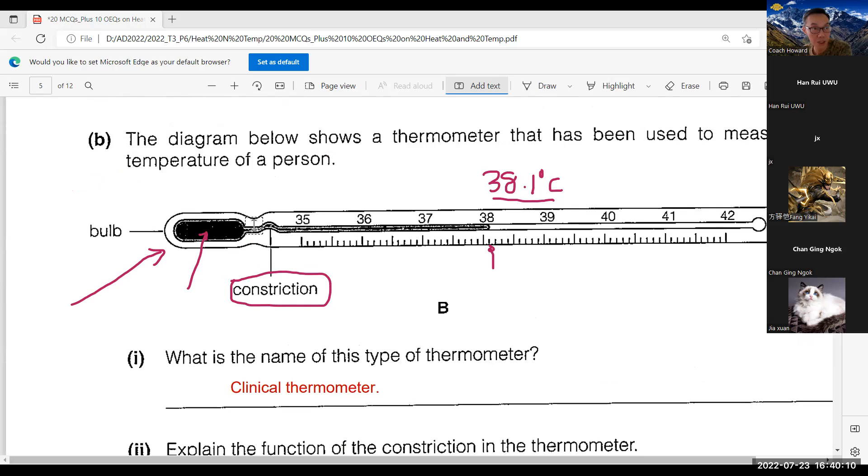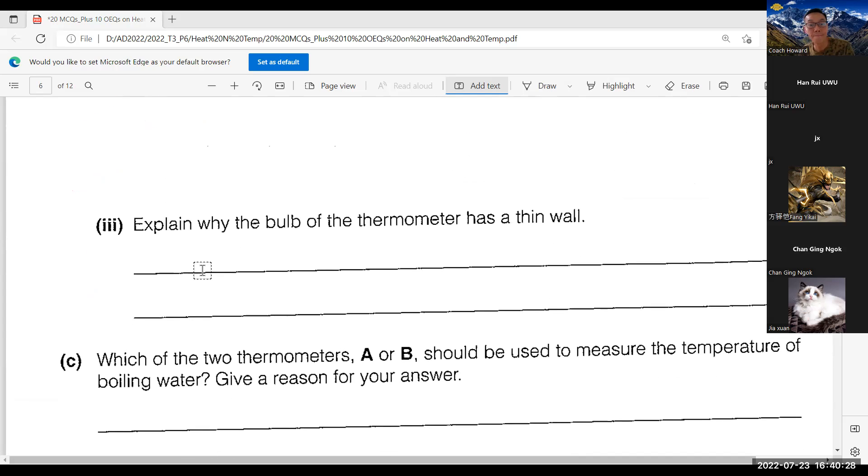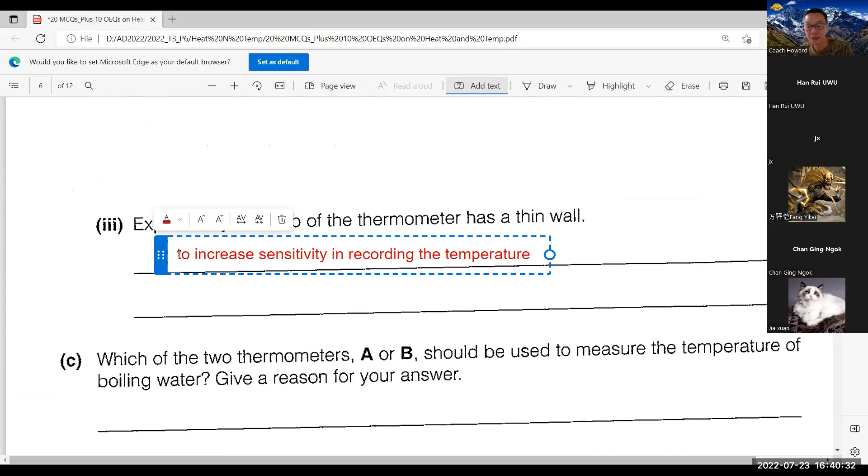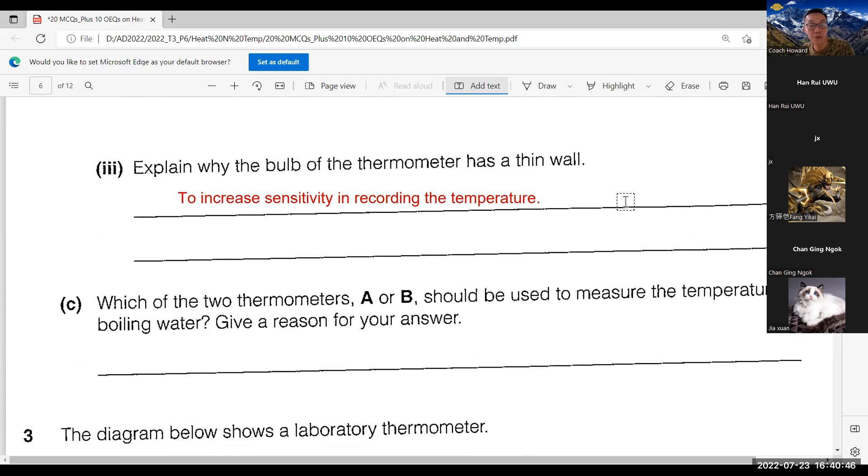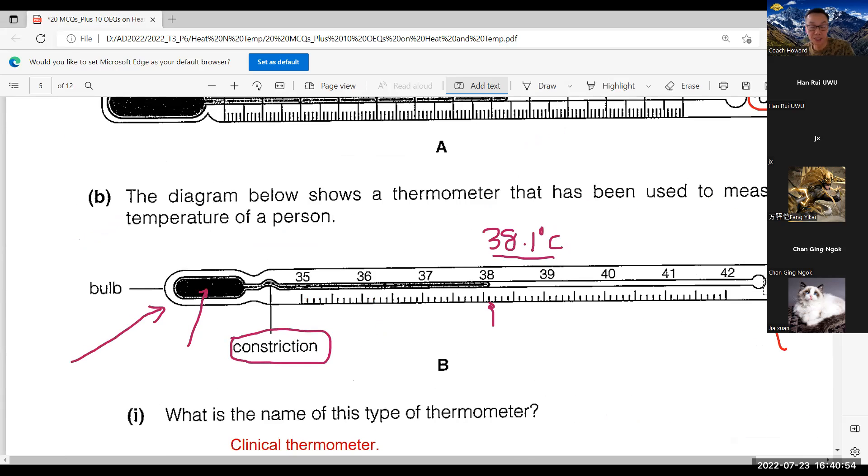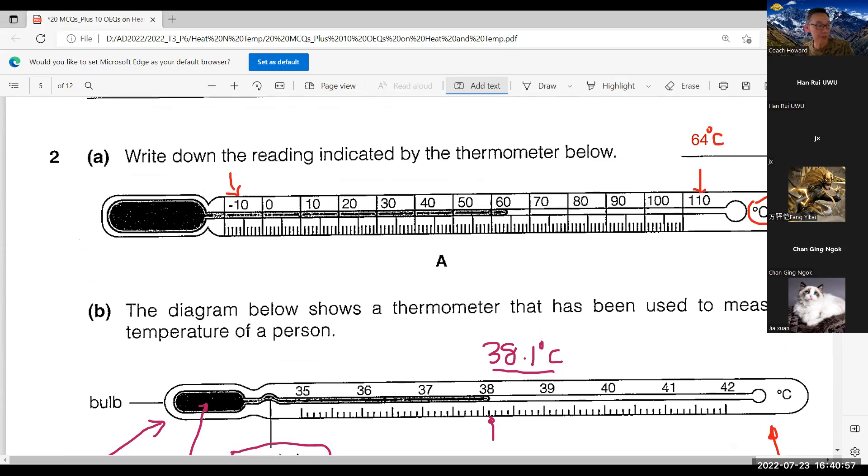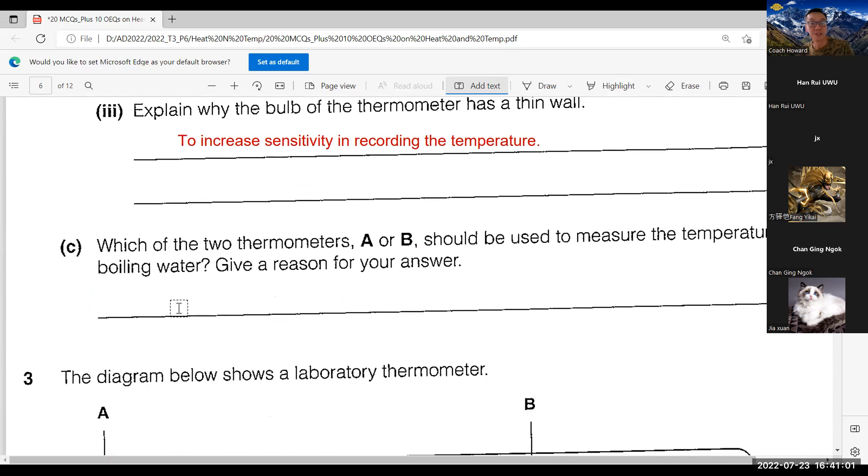If it has a thick wall, the heat from the person cannot be conducted smoothly and quickly to the thermometer. The answer should be to increase sensitivity in recording the temperature. Which of the two thermometers A or B could be used to measure the temperature of boiling water? This is a common sense question. If you use the clinical, this thing will burst.